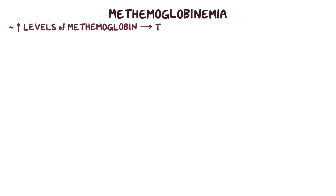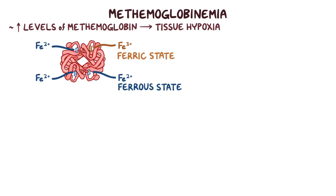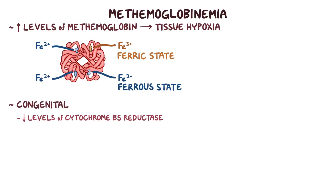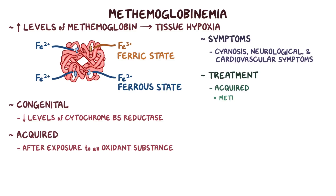As a quick recap: methemoglobinemia is a condition characterized by increased levels of methemoglobin, and it leads to tissue hypoxia. Methemoglobin is an oxidized form of hemoglobin, which means that one of the iron molecules is in the ferric state instead of the ferrous state. Methemoglobinemia can be congenital, where there are decreased levels of cytochrome B5 reductase, or acquired after exposure to an oxidant substance. Symptoms include cyanosis as well as neurological and cardiovascular symptoms. Treatment for the acquired form includes methylene blue and supplemental oxygen, while management of the congenital form focuses on avoiding oxidants.